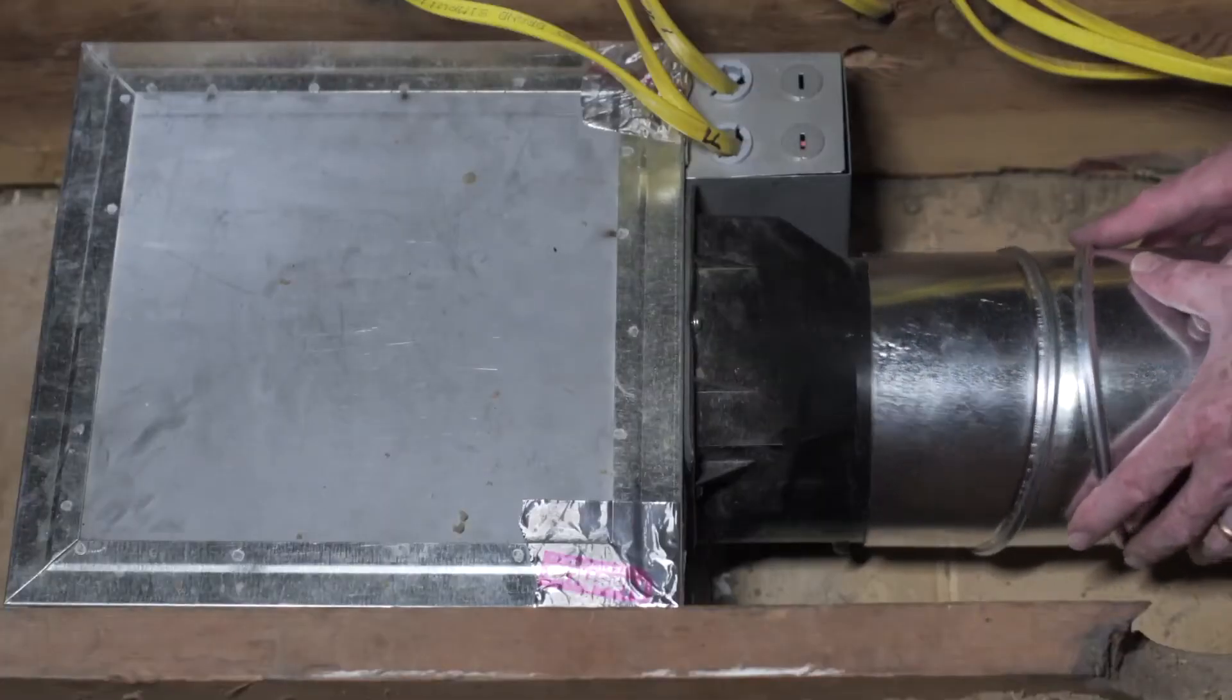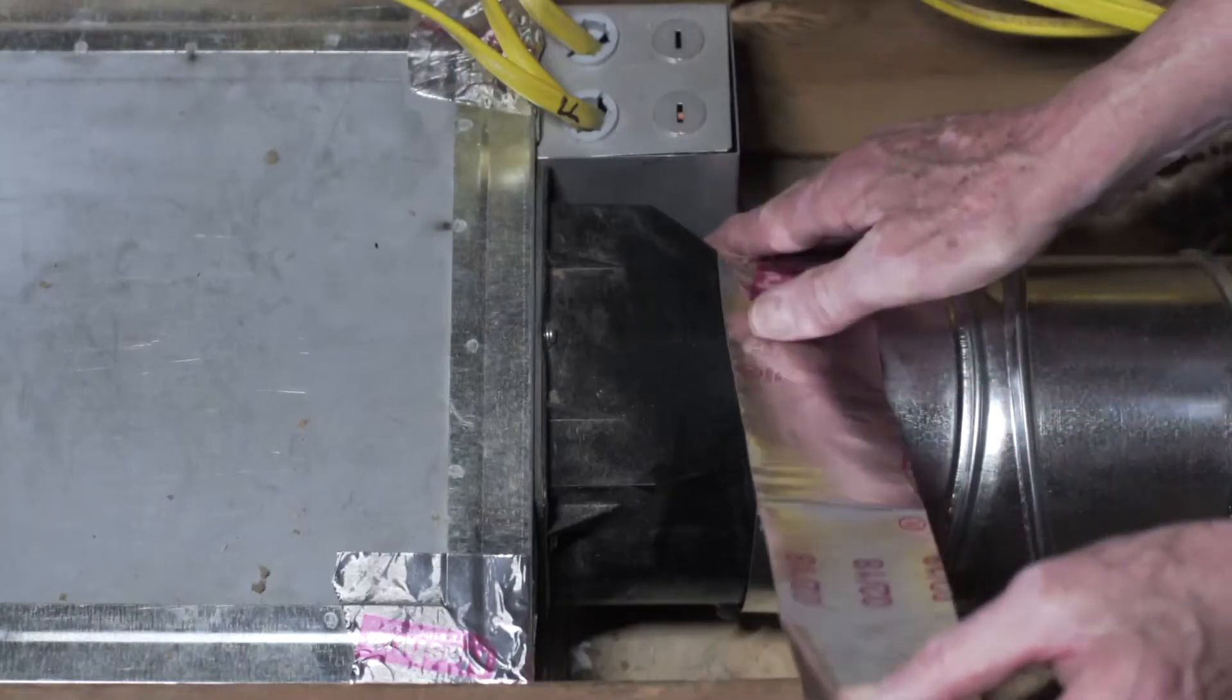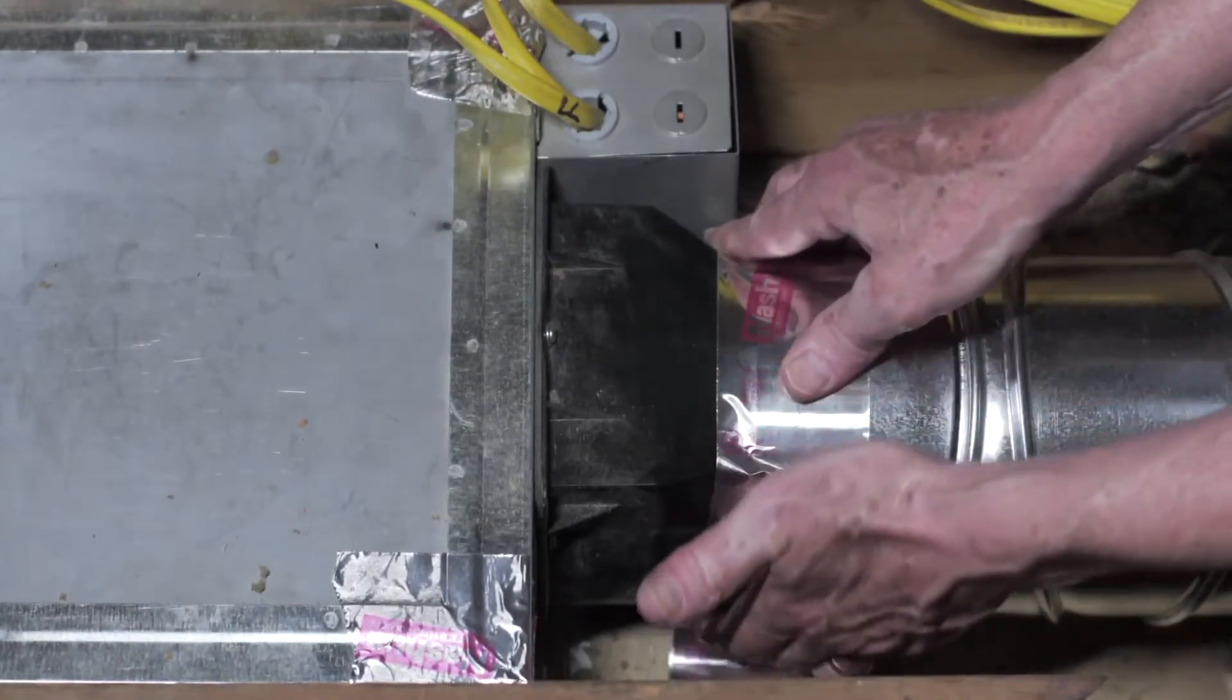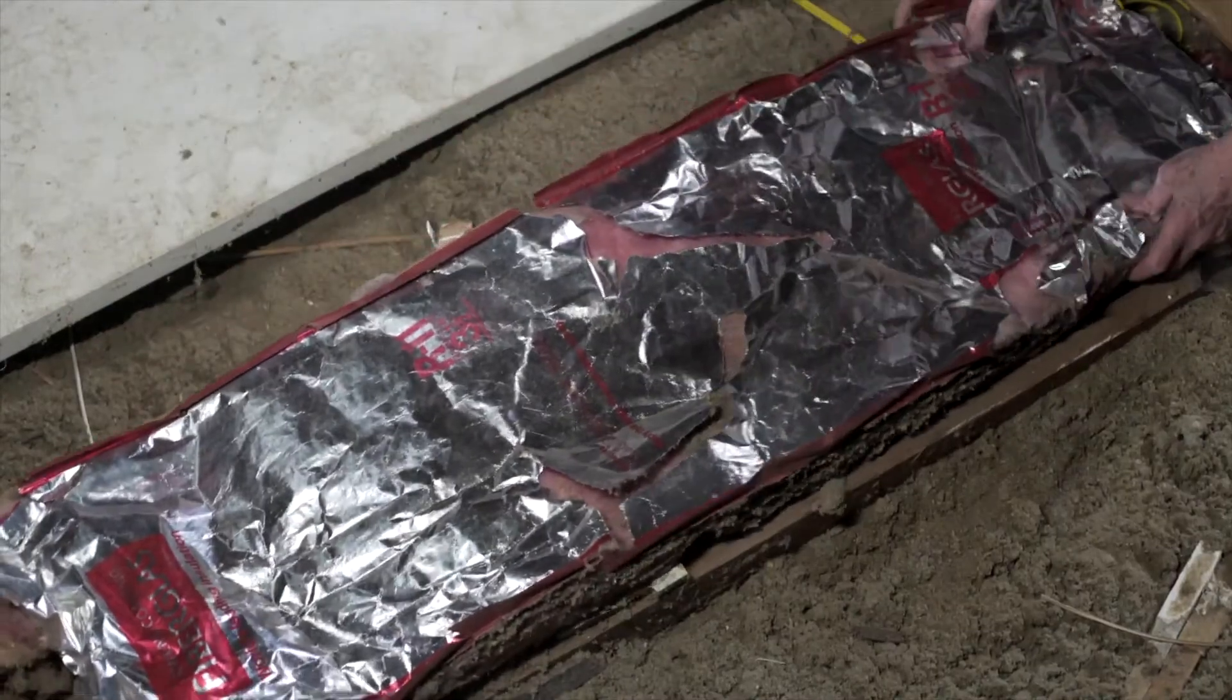Once the housing is secure, connect the ducting to the collar assembly using tape or a screw clamp. It is recommended to wrap or place insulation around the ducting.